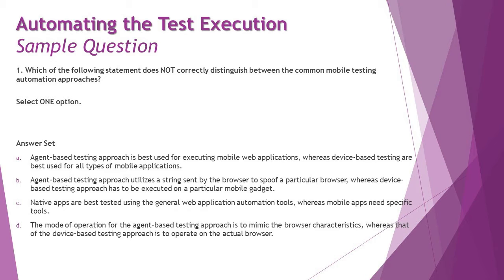The very first question is: which of the following statements does not correctly distinguish between the common mobile testing automation approaches? We are talking about automation approaches and identifying which one does not correctly distinguish between them. The two approaches in our syllabus are agent-based testing and device-based testing. Option A states: agent-based testing approach is best used for executing mobile web applications, whereas device-based testing is best used for all types of mobile applications. That's pretty much appropriate as per the concept.